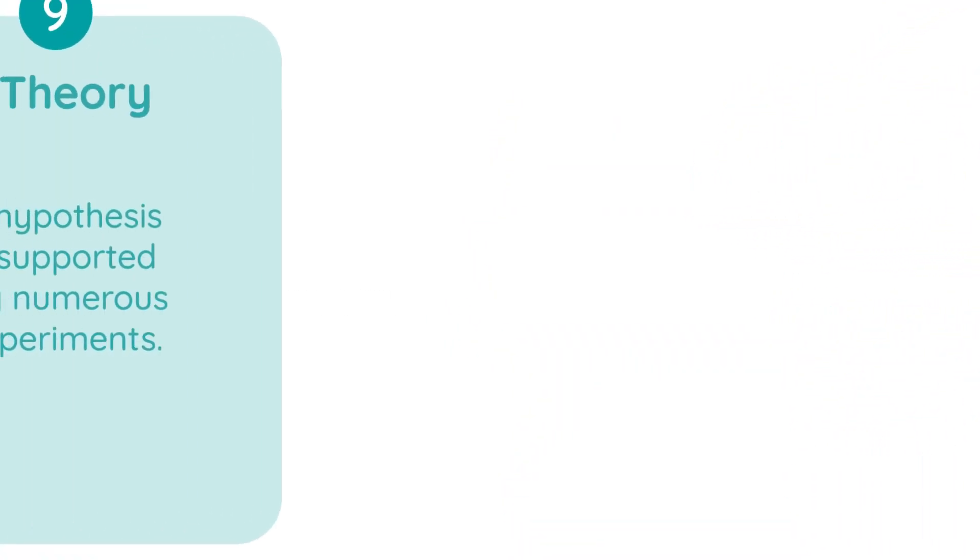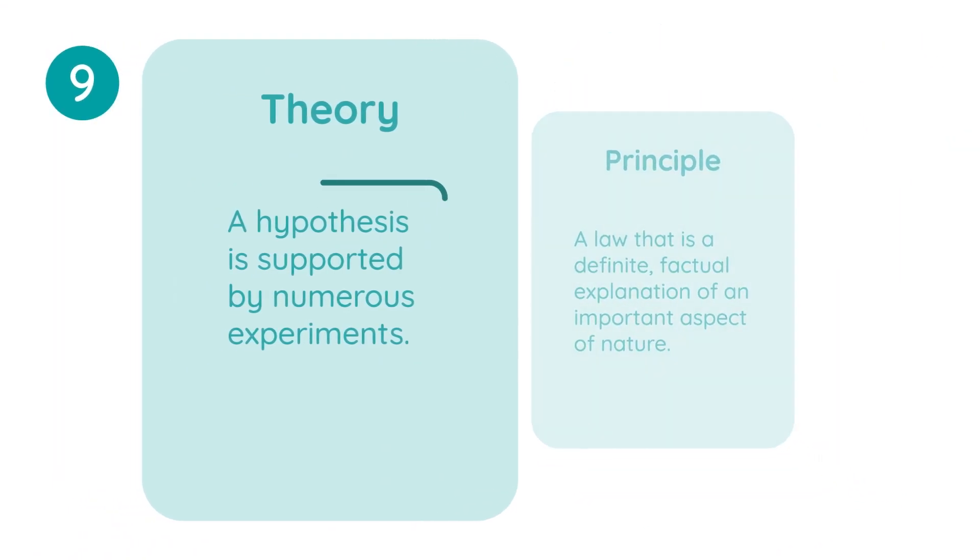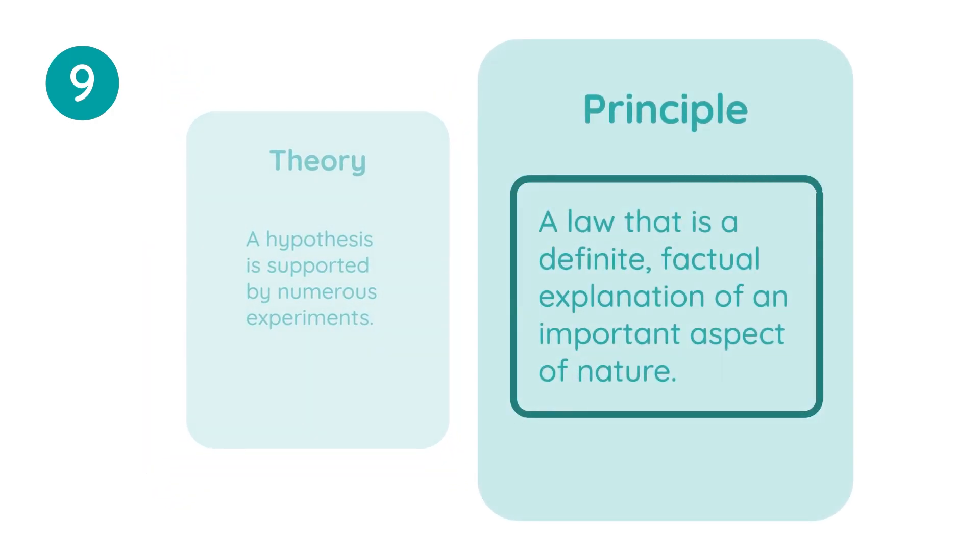The ninth step leads into developing theories and principles. A theory is when a hypothesis is supported by numerous experiments, and a principle is a step above that. A principle is a law that is a definite, factual explanation of an important aspect of nature.